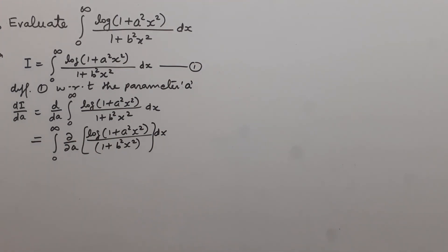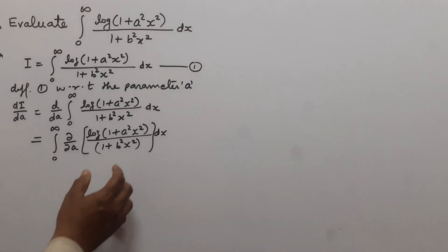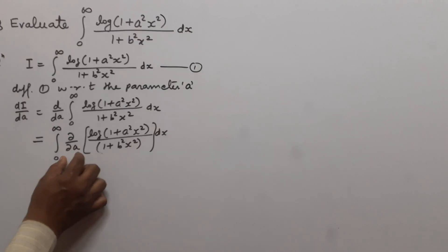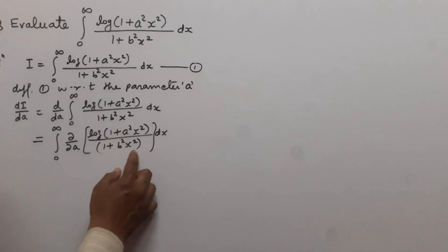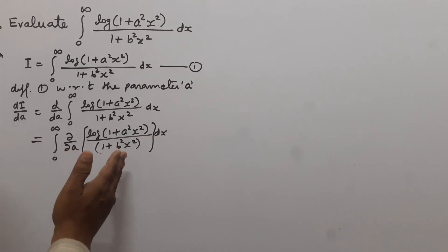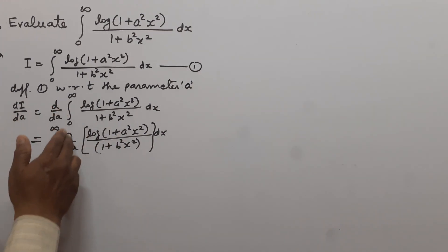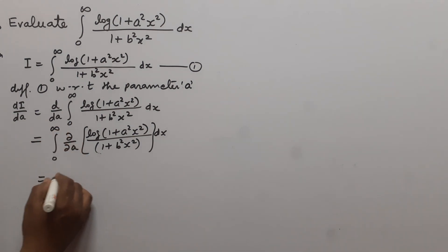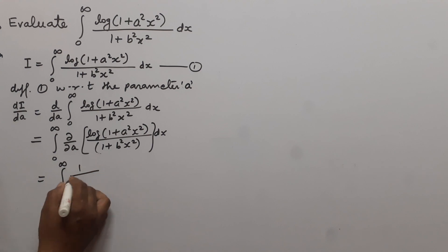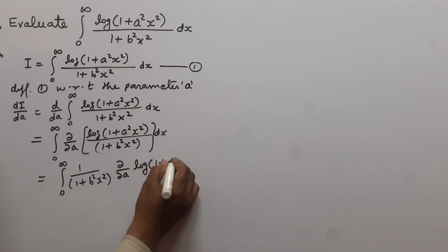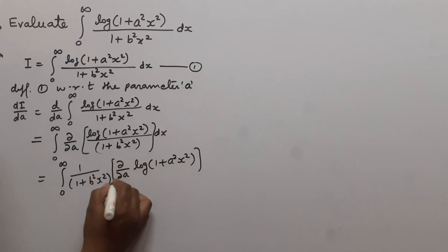We have to differentiate log(1 + a²x²)/(1 + b²x²) partially with respect to a. We can see that (1 + b²x²) is constant with respect to a, so (1 + b²x²) can be taken outside the differential coefficient ∂/∂a. So this becomes the integral from 0 to infinity of 1/(1 + b²x²) times ∂/∂a of log(1 + a²x²) dx.